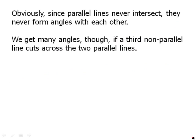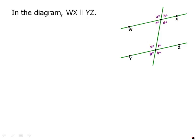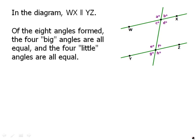We get many angles though, if a third non-parallel line cuts across the two parallel lines, this third line is called a transversal. A transversal is a line that cuts across two parallel lines. So here we have a transversal cutting across the parallel lines wx and yz. And we get eight angles there. Now the four big angles are all equal, and the four little angles are all equal. So in other words, a equals d equals e equals h, and b equals c equals f equals g. That's the big idea.